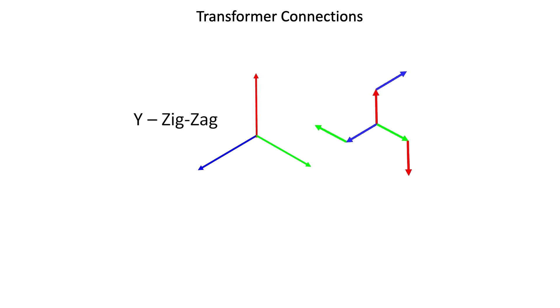The star zigzag, or another name for it is the interconnected star transformer, is a transformer that is used to supply unbalanced single line to neutral and three-phase loads for three-phase four-wire systems.